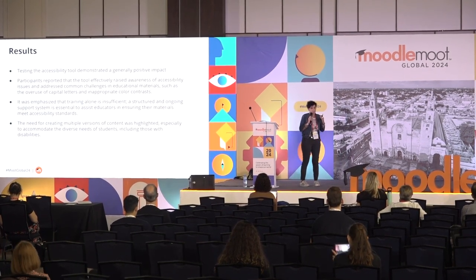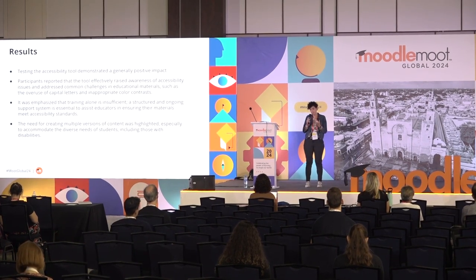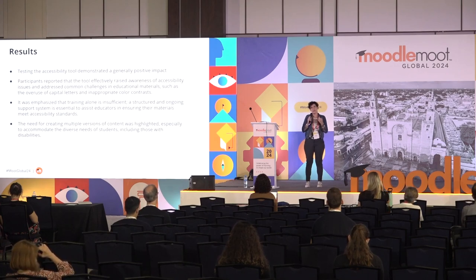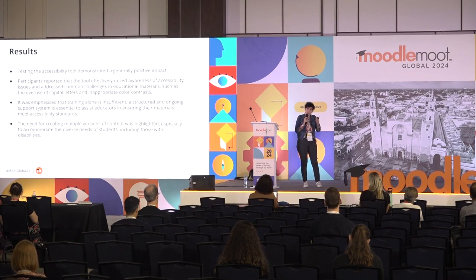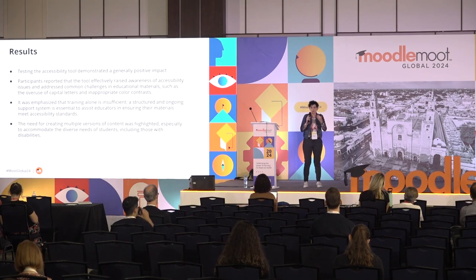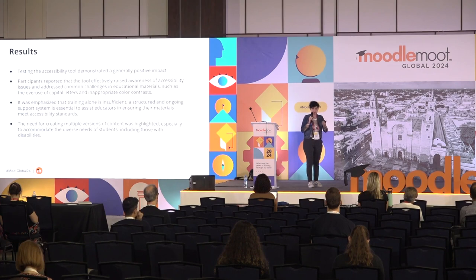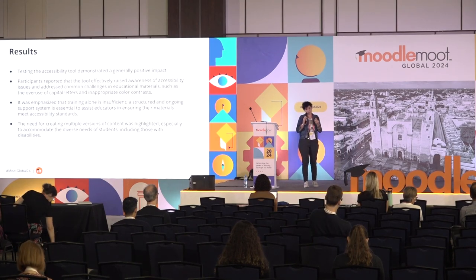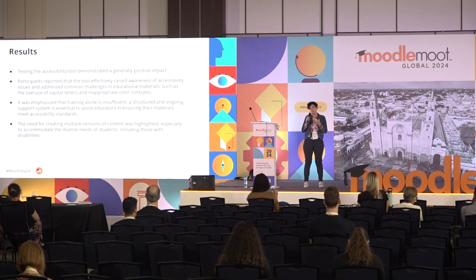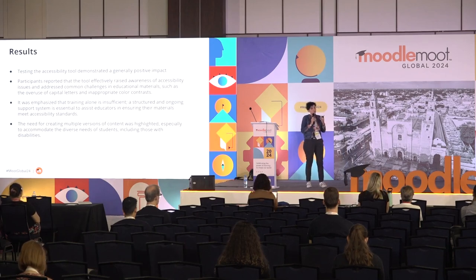The test results were really positive. Our participants found the toolkit very useful, and what we found is that they really came to understand the problem of accessibility. For example, as I mentioned, they used capitalization and a lot of color to create engagement, not understanding that this is a problem for other people. They also underlined the fact that making their content accessible is really hard work, and in most cases they feel alone in this. They suggested that a more structured support is necessary to reach accessibility.